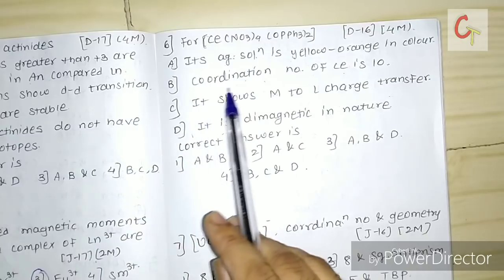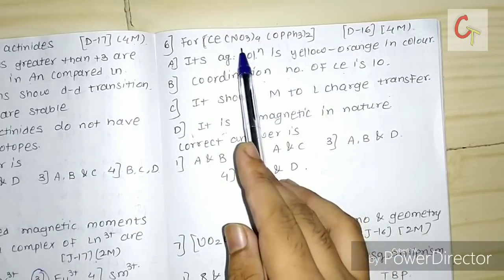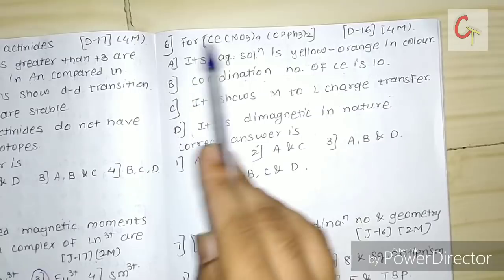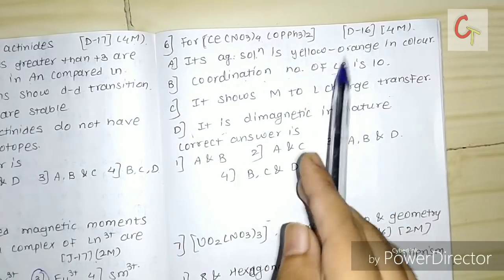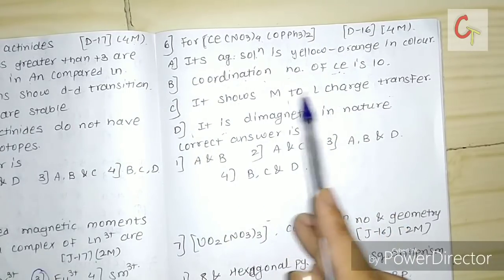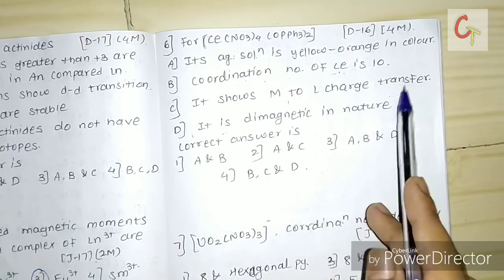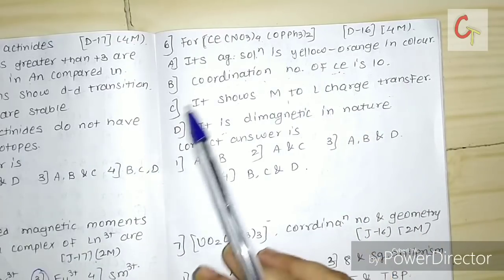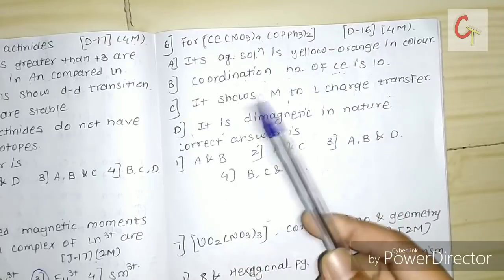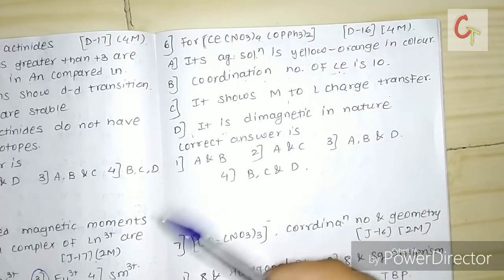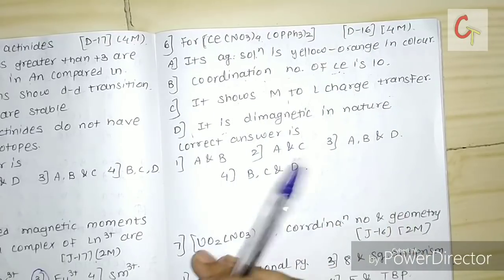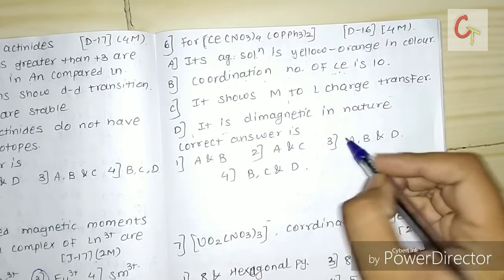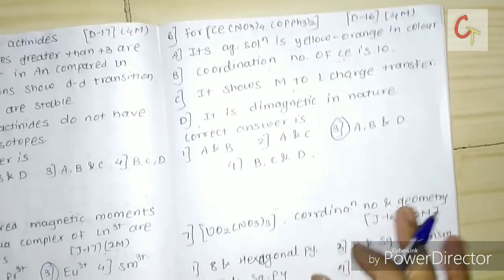The coordination number is indeed 10: NO₃ is a bidentate ligand, so 4×2=8 plus 2 gives 10 — this is correct. The statement that it shows metal-to-ligand charge transfer is wrong; it actually shows ligand-to-metal charge transfer because cerium is in +4 oxidation state and has no electrons for charge transfer. Diamagnetic nature is correct — cerium +4 has no f electrons. So correct answer is third: statements A, B, and D are correct.